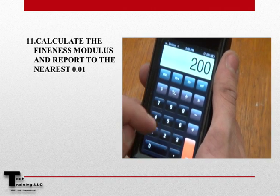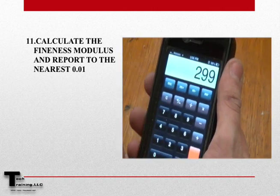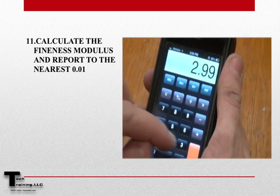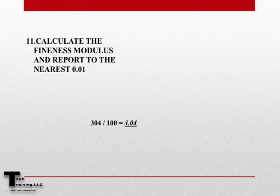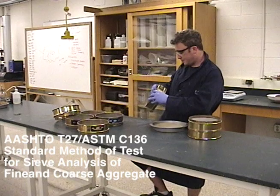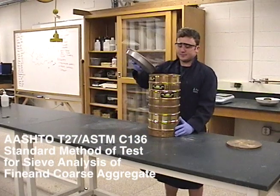We must now calculate the fineness modulus and report this number to the nearest 0.01. To calculate our fineness modulus, we add the total cumulative percent retained of all the material in the sample which is coarser than the 150 micron sieve, and divide this sum by 100. Here, the sum of those percentages is 304, and dividing 304 by 100 gives a fineness modulus of 3.04. For more examples of calculating sieve analysis, please visit the Blackboard section of this training program.